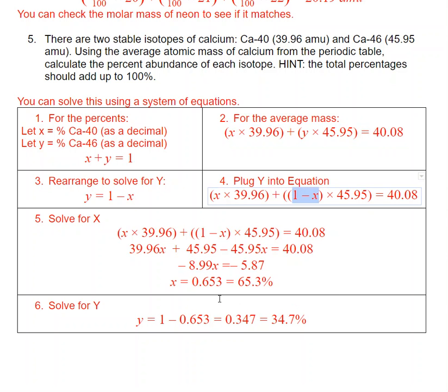Now I have my equation in one term with one variable, so I can solve for x. So I'm going to do my multiplication here, and then I'm going to distribute here. So I'm going to do one times 45.95 and negative x times 45.95. So with a little bit of rearranging, combining like terms, we end up with 0.65.